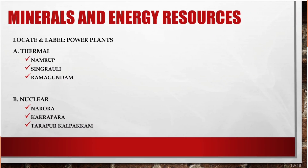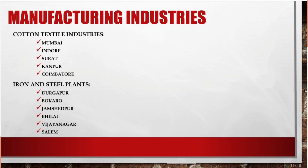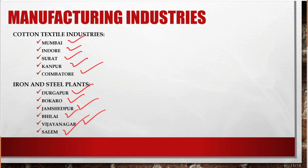You may also need to locate or label power plants like thermal power plants: Namrup, Singrauli, and Ramagundam. Nuclear power plants: Narora, Kakrapar, and Tarapur. Next, cotton or textile industries: Mumbai, Indore, Surat, Kanpur, and Coimbatore. Then iron and steel plants: Durgapur, Bokaro, Jamshedpur, Bhilai, Vijayanagar, and Salem.